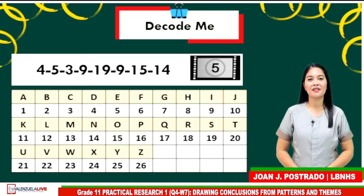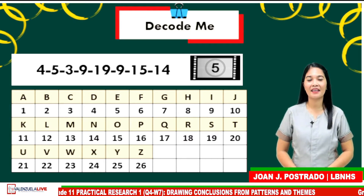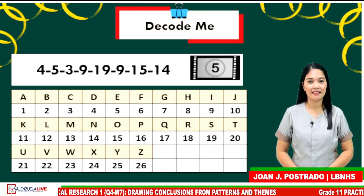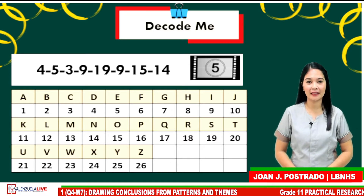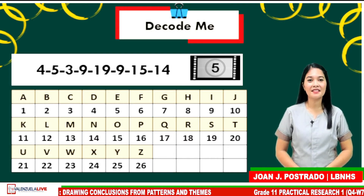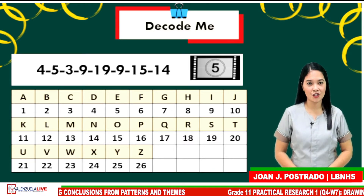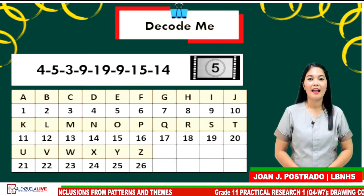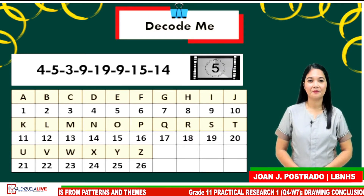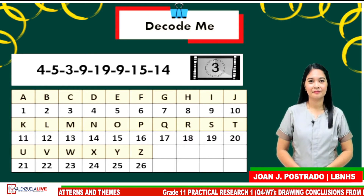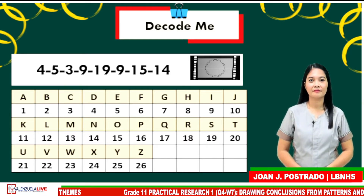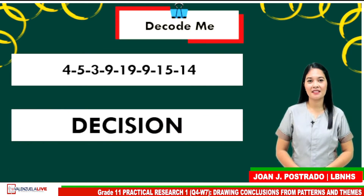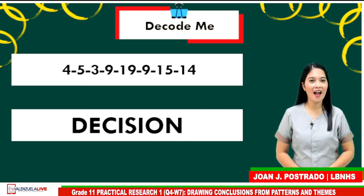Next numbers are 4, 5, 3, 9, 19, 9, 15, and 14. Clue: this refers to final judgment. If your answer is decision, great job!